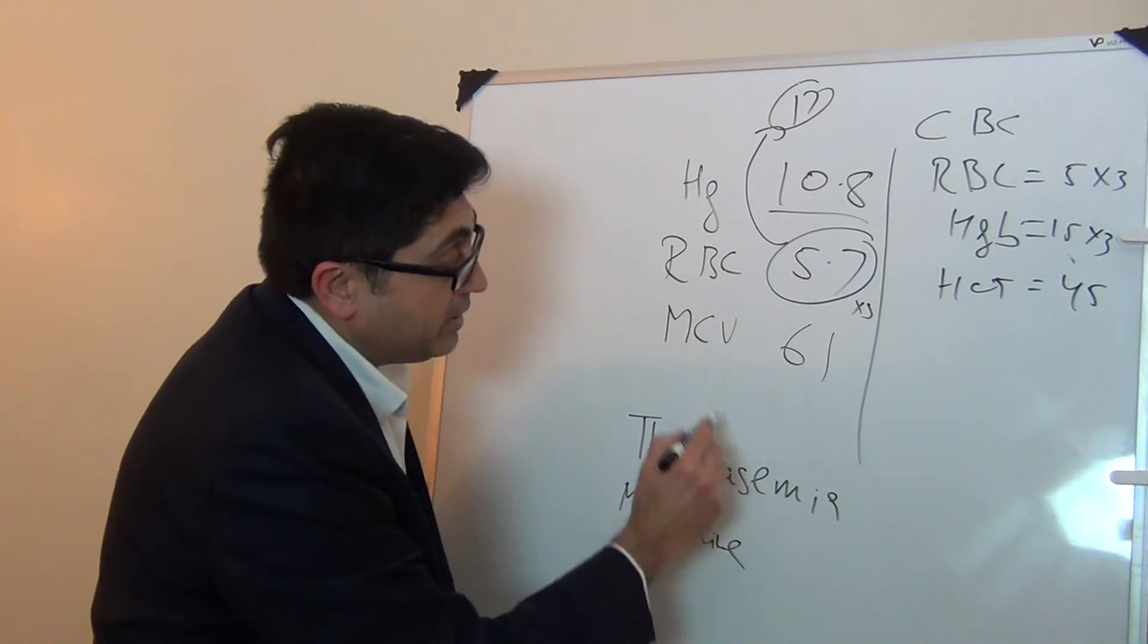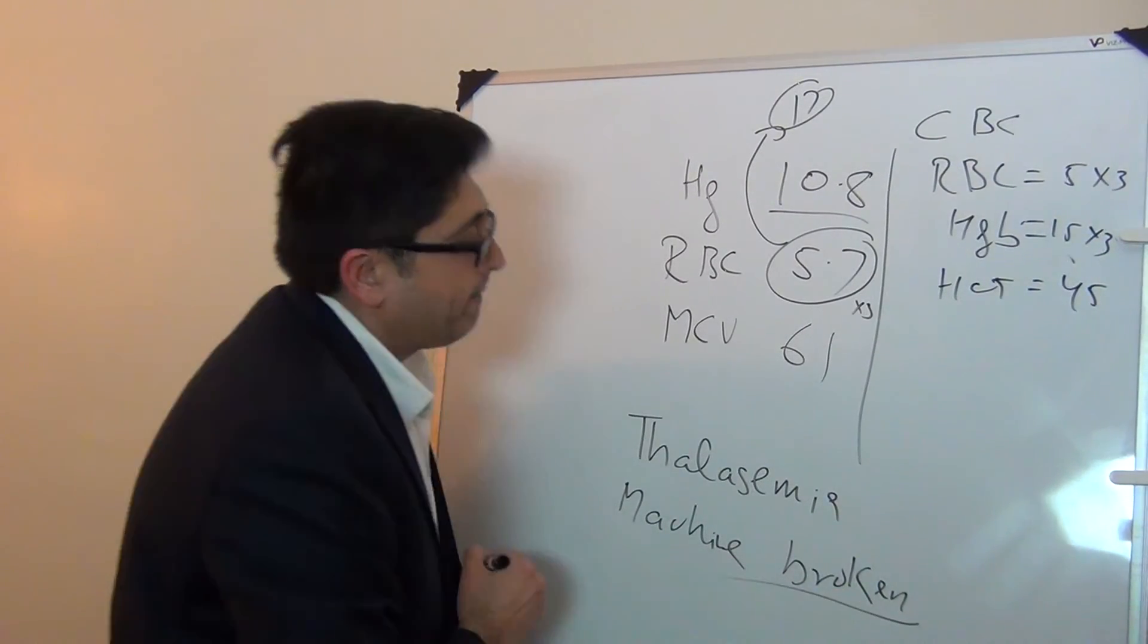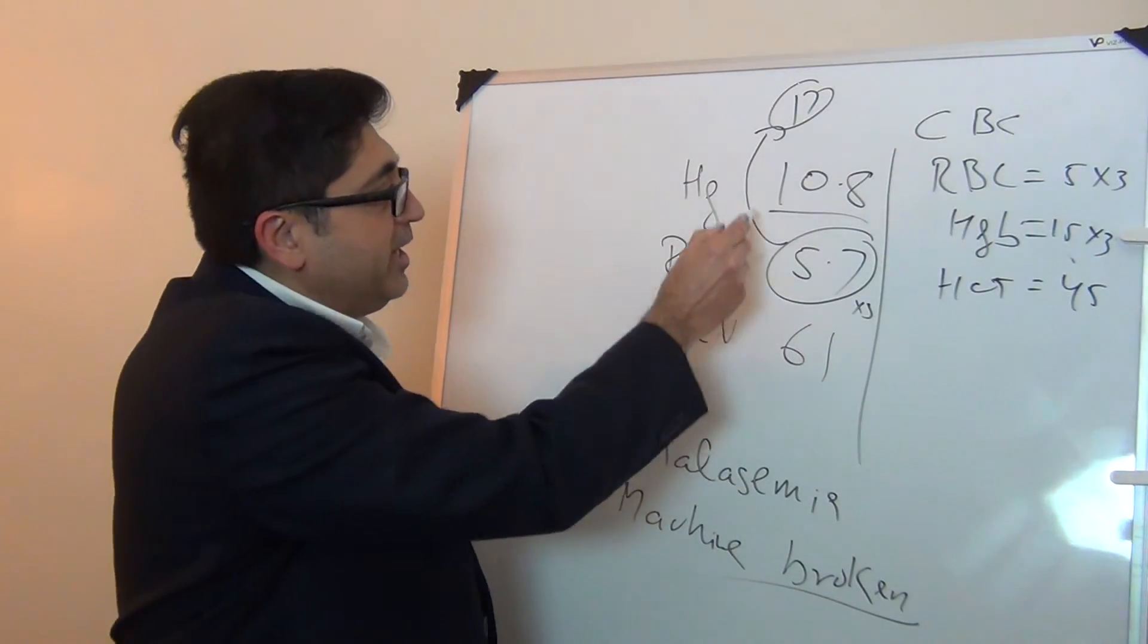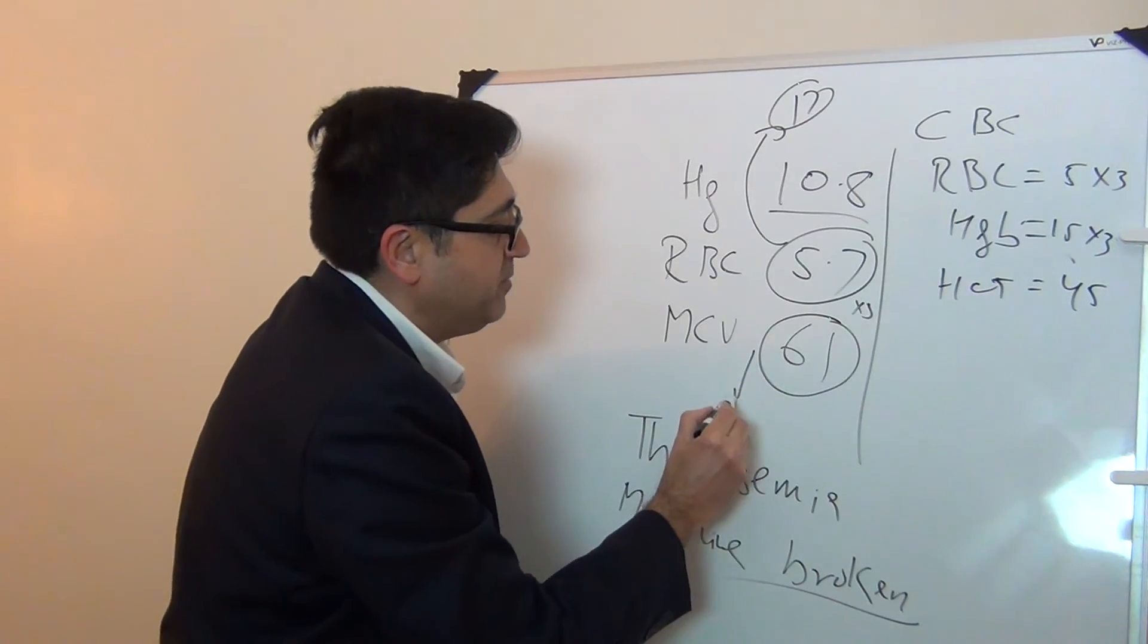This patient has RBC 5.7, hemoglobin 10.8, and MCV 61. So low MCV, high RBC, and low hemoglobin.